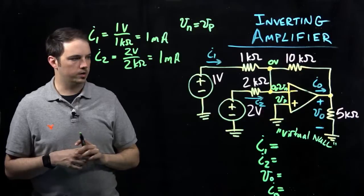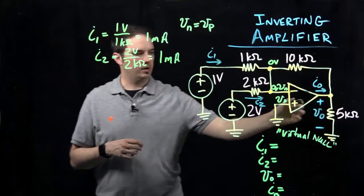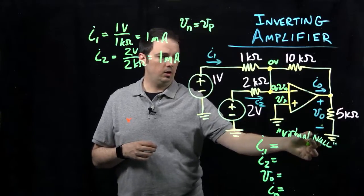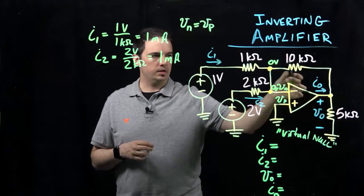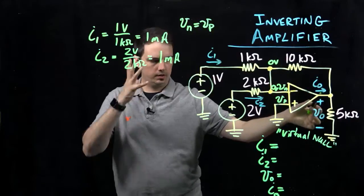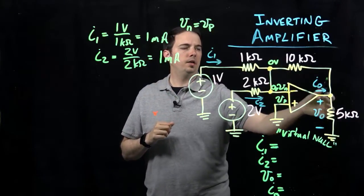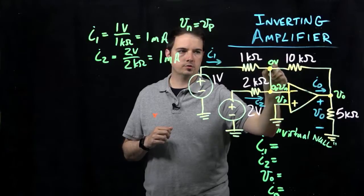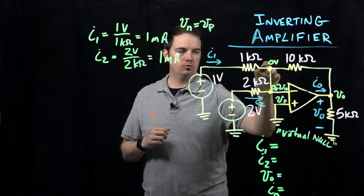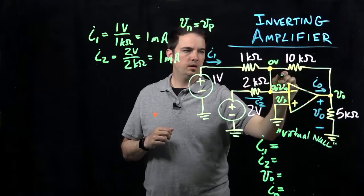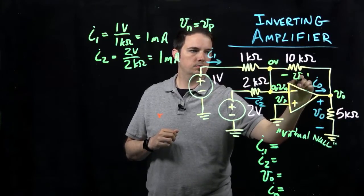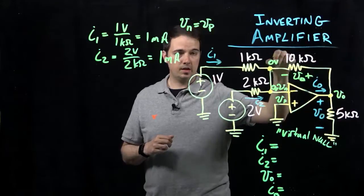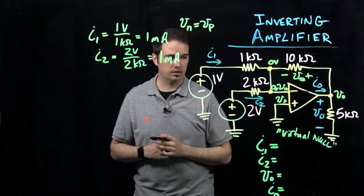Now in figuring out what is V0 specifically, V0 is indicated as the voltage rise from ground here up to this point, which is the output terminal. Following this loop around thinking in the mindset of KVL, that voltage V0 has to then drop back across this 10 kiloohm resistor because this node is sitting at zero volt potential.